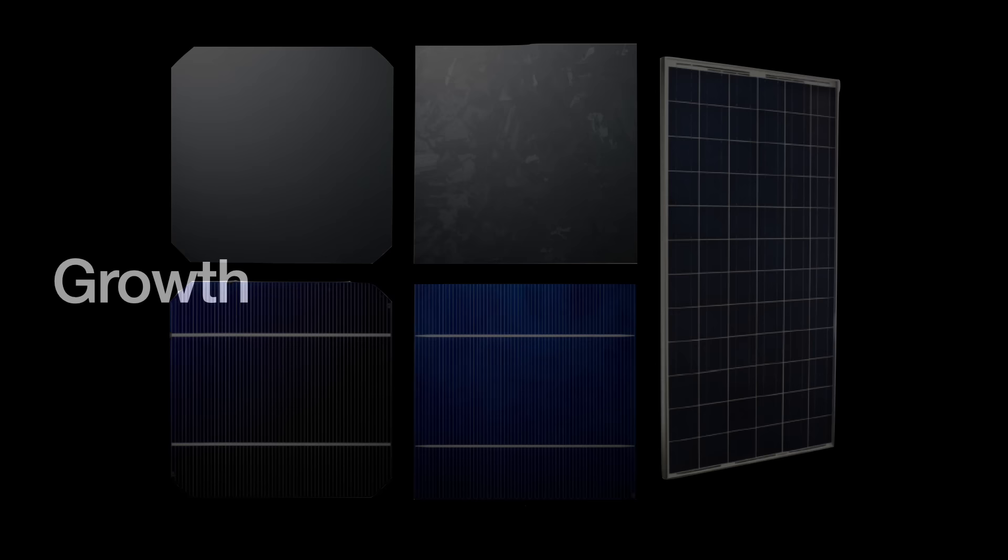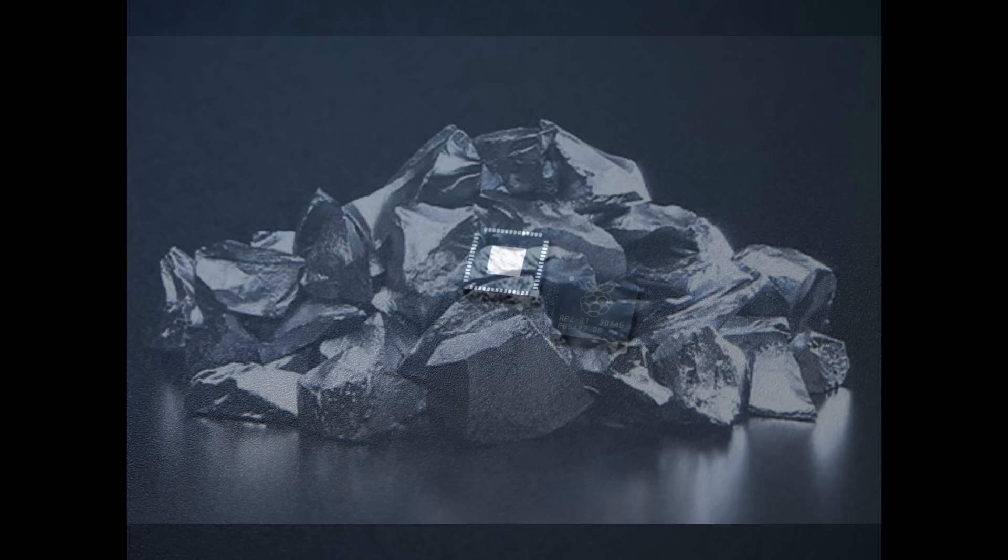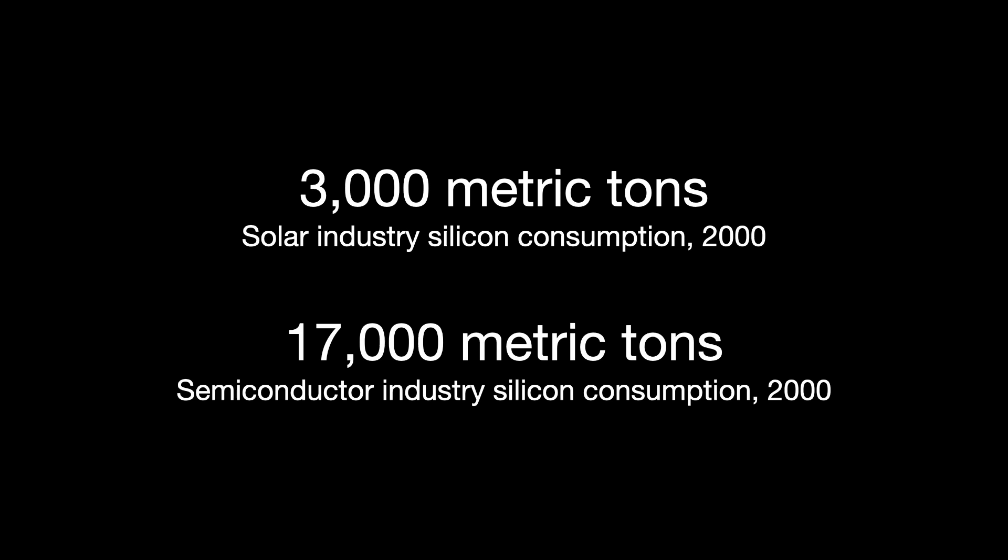In the industry's early years, they used the slightly flawed silicon byproduct from the semiconductor wafer producers, essentially their scrap. And this was fine as long as the solar industry remained relatively small compared to semiconductors, which it was. As late as 2000, the solar industry used about 3,000 metric tons of silicon. In comparison, the semiconductor industry consumed about 17,000 metric tons.